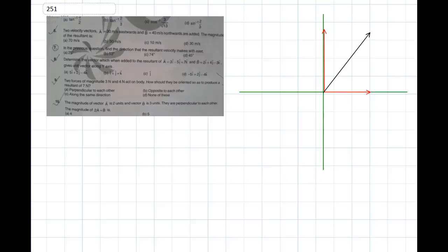The question asked here is: there are two vectors, vector A which is 30 meters per second towards east and vector B which is 40 meters per second northwards. We have to find the direction that the resultant velocity makes with the east direction.